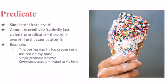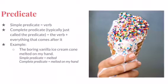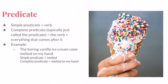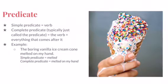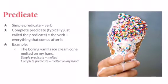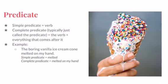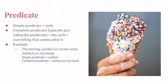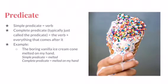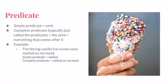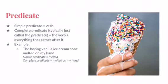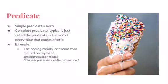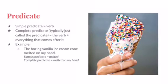The predicate is the second element that all complete sentences have. And just like with the subject, there are two types, simple and complete. The simple predicate is simply the individual verb in the sentence. The complete predicate, which we typically refer to as the predicate, is the verb plus everything in the sentence that comes after it. Using our example — 'The boring vanilla ice cream cone melted on my hand' — the simple predicate is just the verb 'melted,' and the complete predicate is 'melted on my hand.'